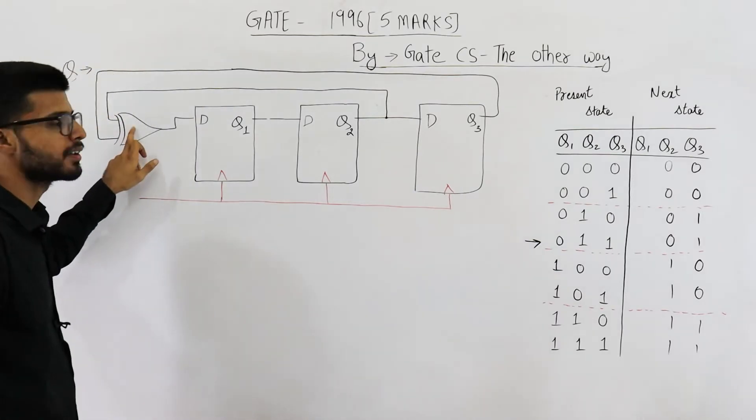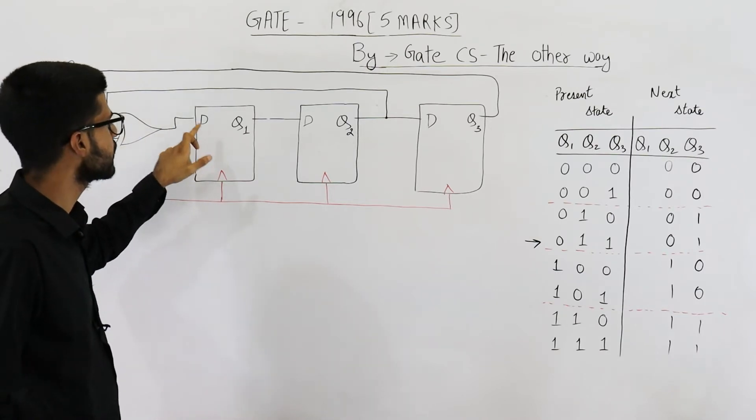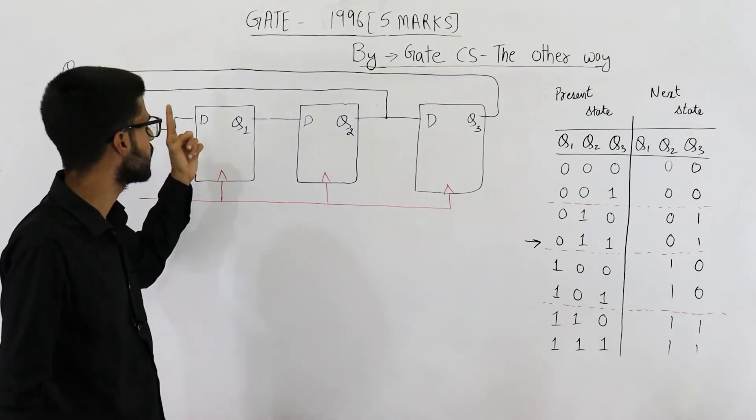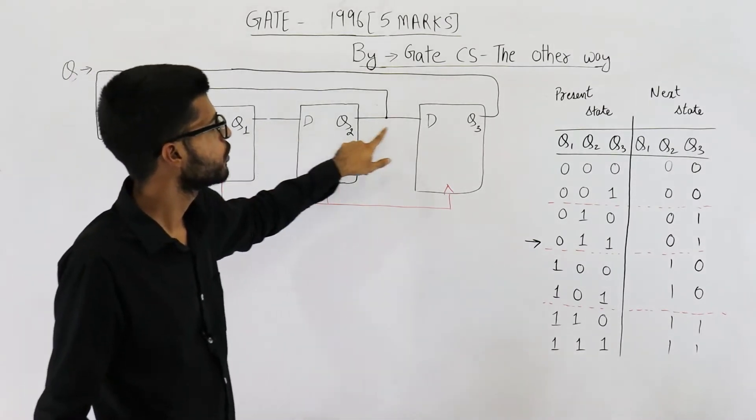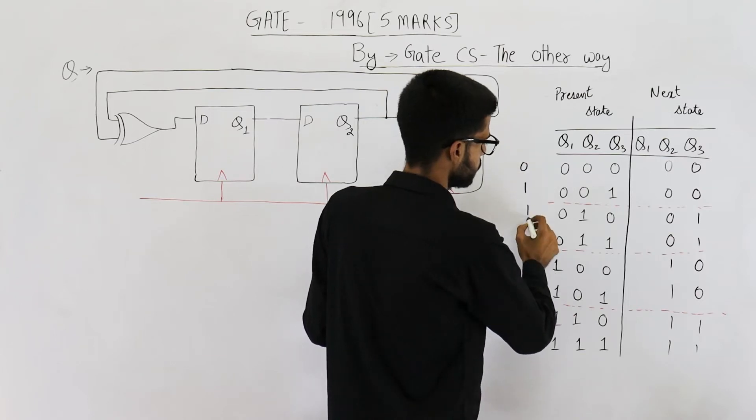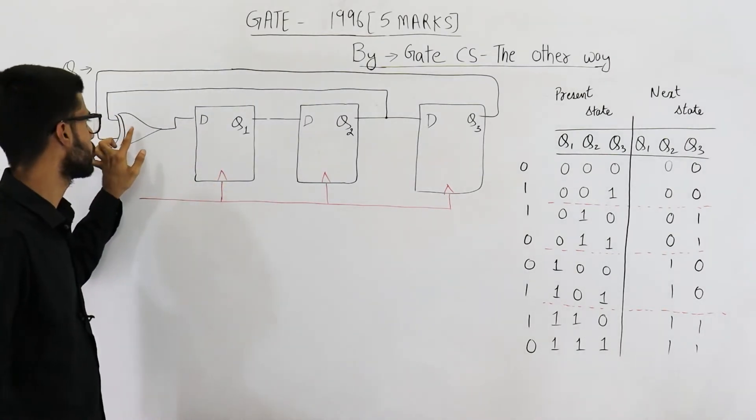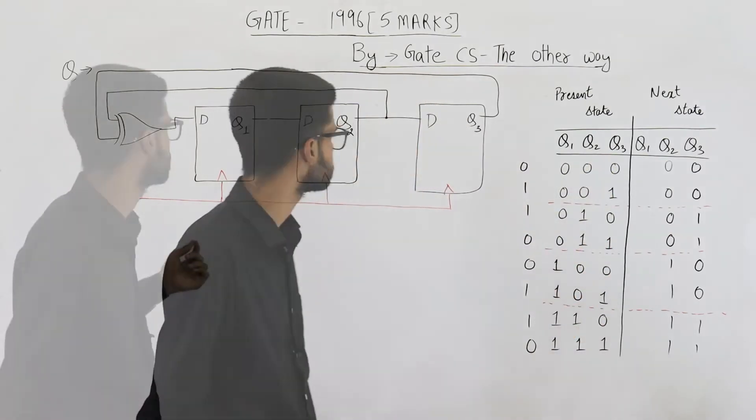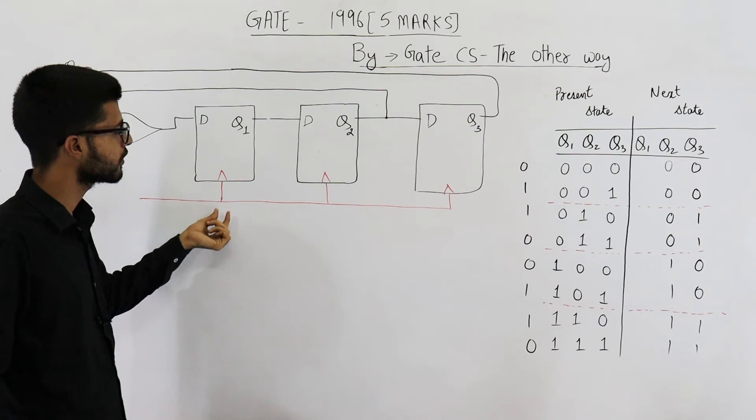Now, whatever is the output of this XOR gate will be shifted here. This output of the XOR gate is connected to the input D, and you very well know on seeing a clock, this value of D will be given as it is in the output Q1. So we need to determine the XOR of Q2 and Q3. I'm writing it here.